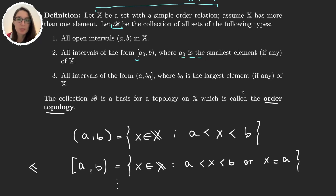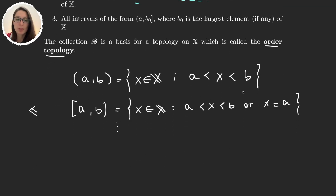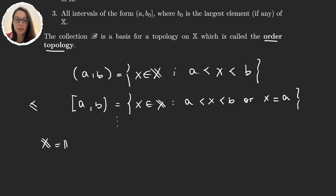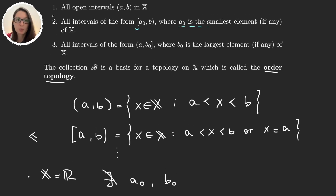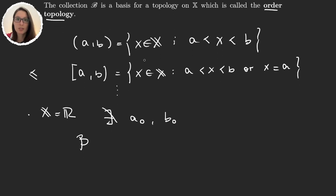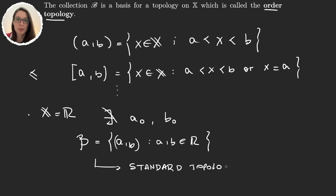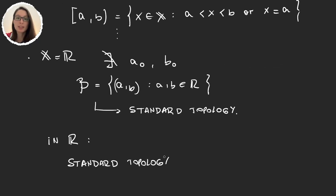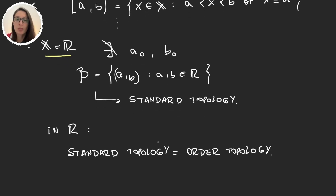Looking at this abstractly isn't very helpful, so let's consider a particular example. What happens if X is the real numbers? In that case, there exist no A₀ and B₀, because the real numbers form an unbounded set — no smallest or largest element. So the basis would only consist of all open intervals (A, B) in ℝ. If you've seen our previous videos, you'll know that the topology generated by this basis is the standard topology. So in the real numbers, the standard topology equals the order topology. Now let's see how this works with other sets that have different orders.